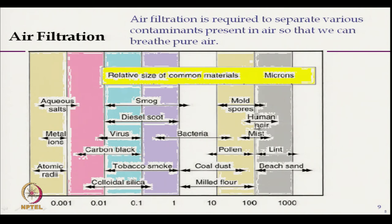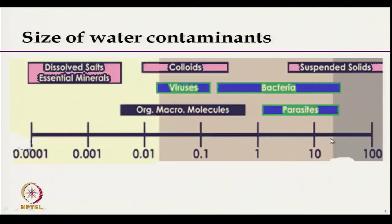Similarly, human hair, mist, lint, and pollen are different particles which we need to separate from air to get pure air. As far as water contaminants are concerned, similar dimensions are present: bacteria around 1 micron, virus ranging from 0.01 to 1 micron, and parasites are among the different particles found in water.